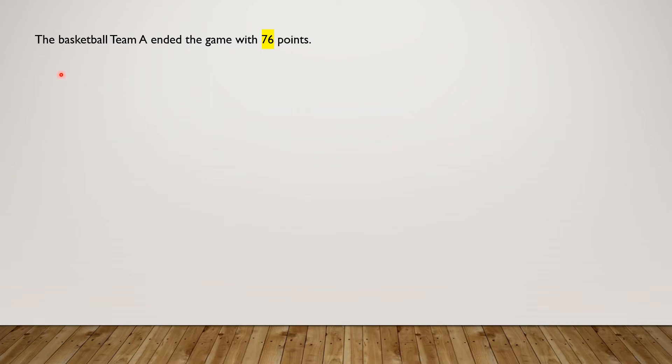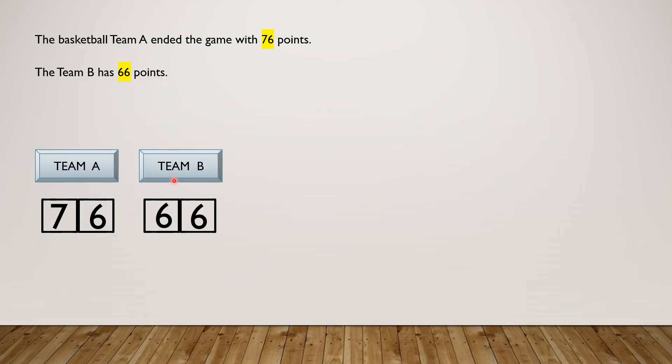The basketball team A ended the game with 76 points. So here's team A with 76 points. Team B has 66 points. So here is team B with 66 points. By how many points did team A win?